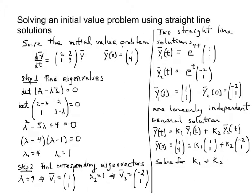As I've done on a previous screencast, I can find the eigenvalues by setting up what is called the characteristic equation. That leads to what is called the characteristic polynomial. The characteristic polynomial, when factored — and if not we'd have to use the quadratic formula — reveals two eigenvalues.